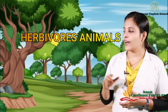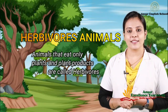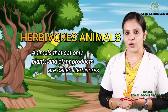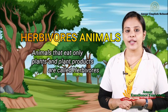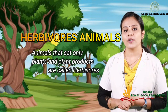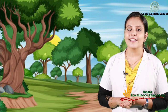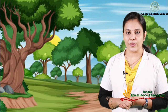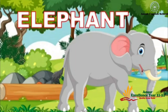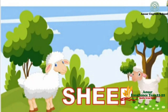First one, herbivores. The animals that eat only plants and plant products are called herbivores. Let's see some examples of herbivores: elephant, cow, sheep.